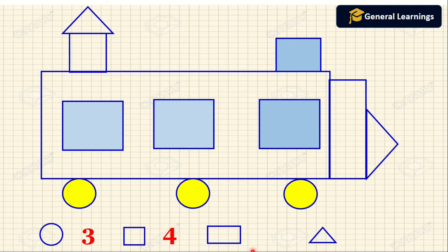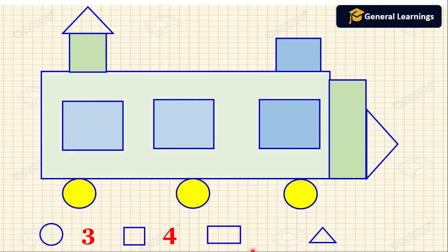Now we are going to count the number of rectangles: one, two, three. So the number of rectangles present in this picture is three.